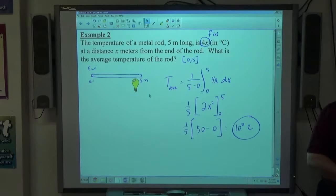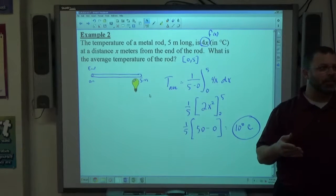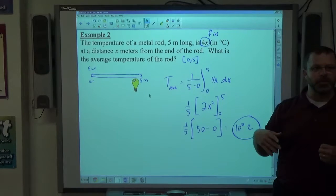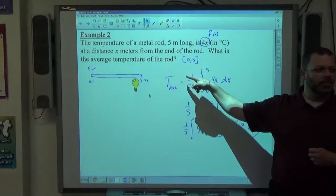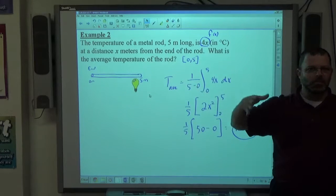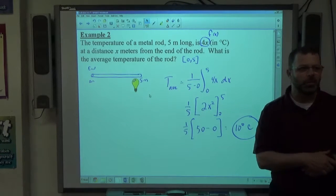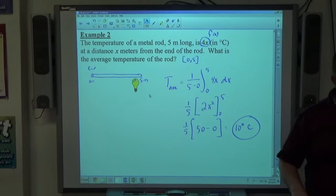If I had a more elaborate function that represented the temperature, let's say the temperature of the rod is x squared plus 4x plus 5 or something like that, all of a sudden now it's going to vary a little bit more differently. So, I mean, it seems like 0 at the end, 20 at the other end, divide those by 2, you get 10. That's just because it's kind of a uniform temperature situation. If it was less uniform, then you wouldn't get that just the average of the end points. So, keep that in mind.